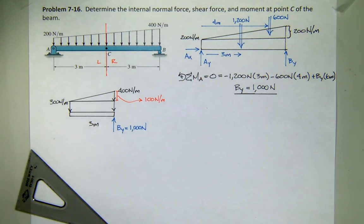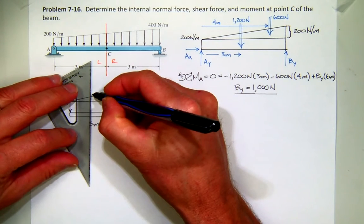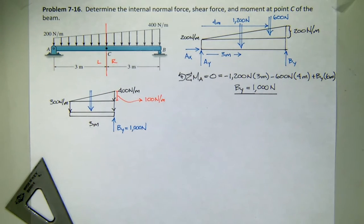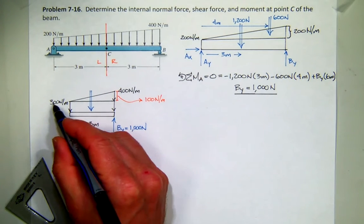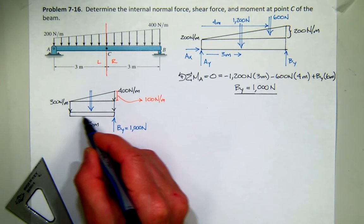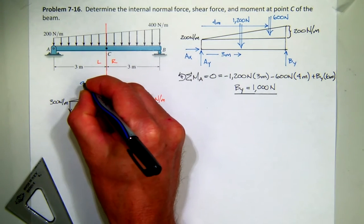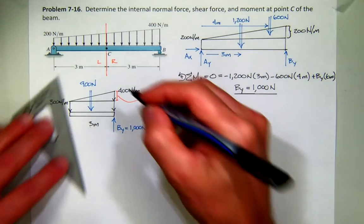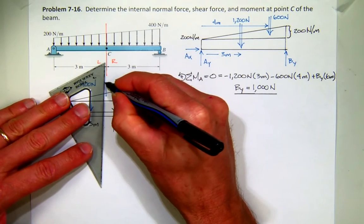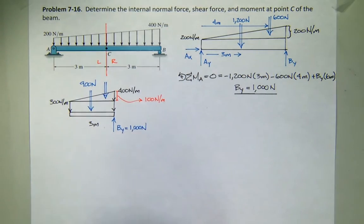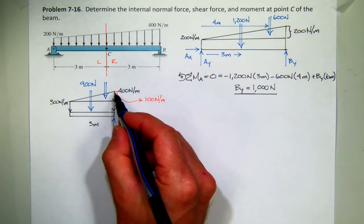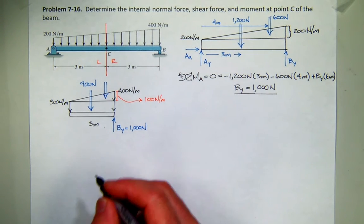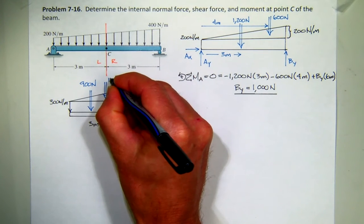So with that information, I can come back and find the concentrated equivalent from the rectangular section, which would be 300 newtons per meter times 3, or 900 newtons. And I can find the equivalent force for my triangular piece, which is 100 times 3 divided by 2, which should be 150 newtons.